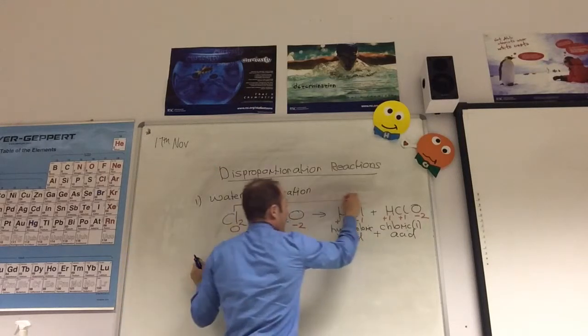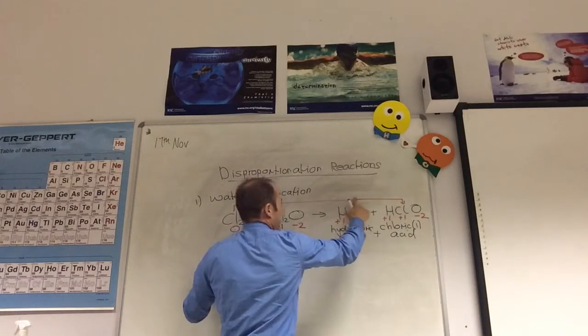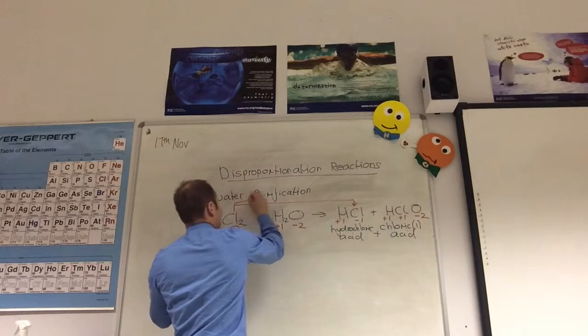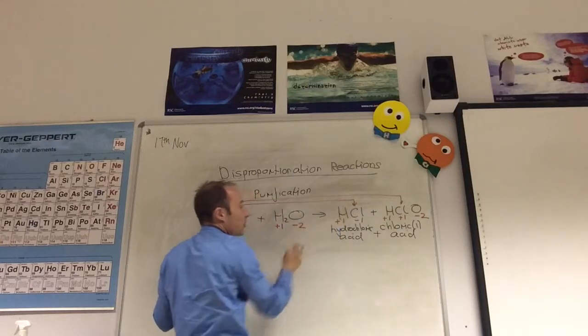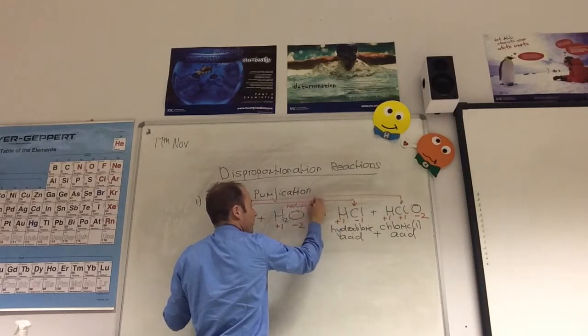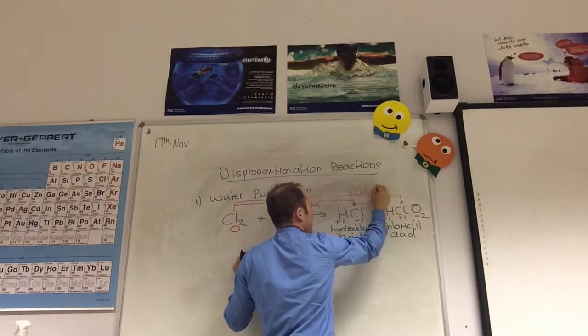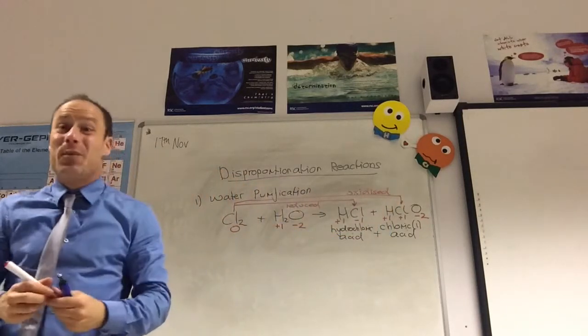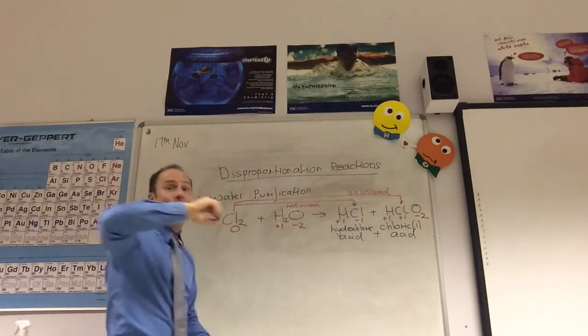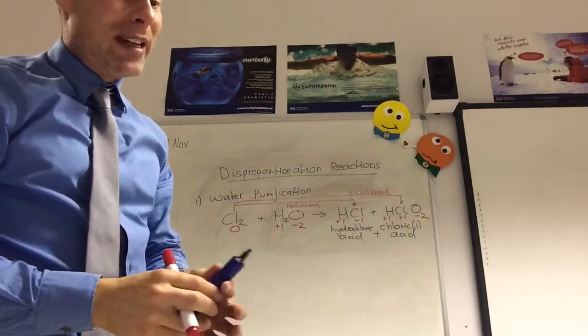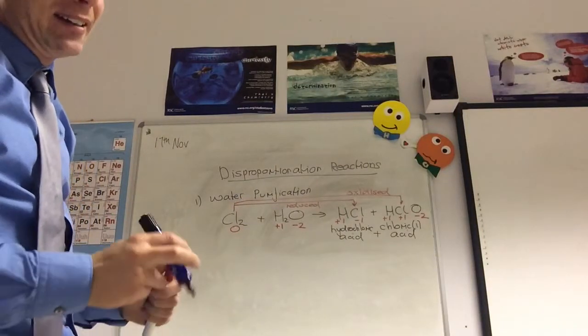Chlorine goes to there, but he also goes to there. In that case, this one here, the chlorine's gone from zero to minus one, so that shows chlorine being reduced. But this line shows chlorine going from zero to plus one, which shows chlorine being oxidized. And this is an example of a disproportionation reaction, where chlorine is both oxidized and reduced. So it's a very special type of redox reaction.